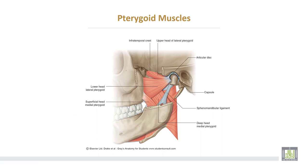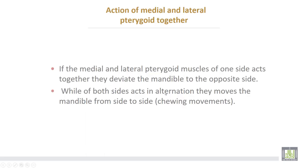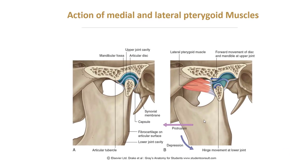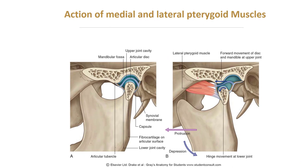This is the lateral pterygoid muscle with its upper head and lower head, and this is the medial pterygoid muscle with its superficial head and deep head. Action of the medial and lateral pterygoid muscles together: if the medial and lateral pterygoid muscles of one side act together, they deviate the mandible to the opposite side. If both sides act in alternation, they move the mandible from side to side — this is called the chewing movement of the mandible. The lateral pterygoid is attached to the capsule of the temporomandibular joint, to the neck of the mandible, and to the intra-articular disc. Movements include protrusion and depression of the mandible.